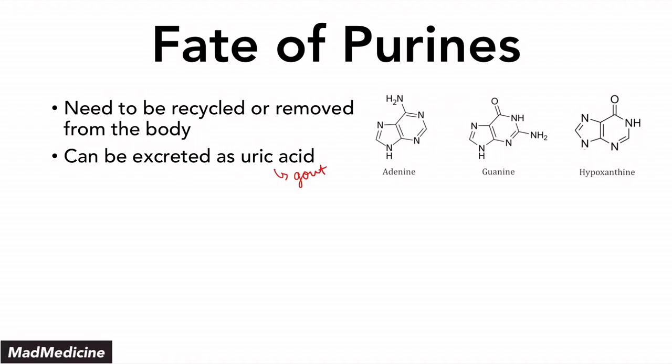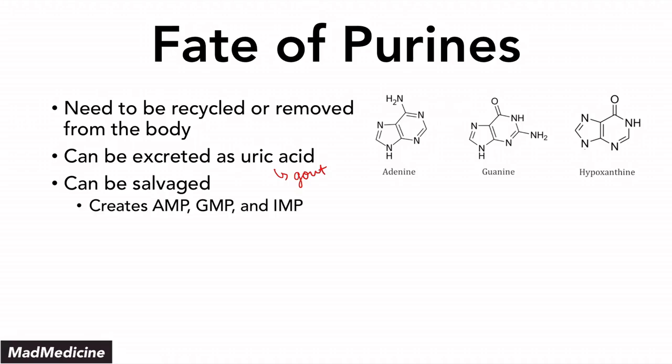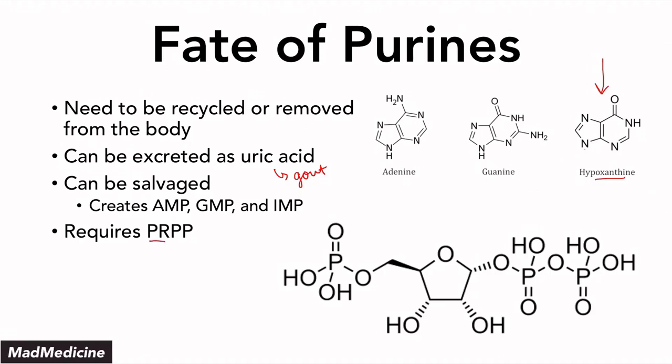Purines are going to be salvaged in several forms, and they're salvaged by recreating the AMP, GMP, and IMP molecules. Keep in mind, we also have hypoxanthine. This does not play a role in the synthesis of DNA or RNA, but it does play a role in the synthesis of IMP and purine salvage. The key molecule you need to remember is PRPP. Purine synthesis essentially is going to require PRPP, and so is pyrimidine synthesis — but purine salvage also needs PRPP because without it, you're not going to be able to salvage anything. This is what PRPP looks like — it is essentially a modified ribose sugar.